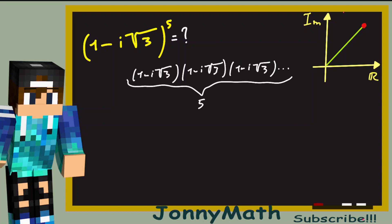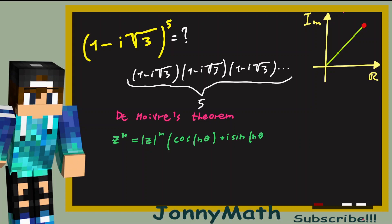But there is actually a shortcut to do it. We can use De Moivre's theorem, which states that if we have any complex number z raised to an integer power n, this is equal to the modulus of that complex number raised to the n-th power, times the cosine of n·θ plus i sine of n·θ.